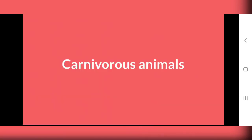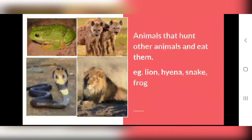The second group of animals is Carnivorous Animals. Carnivorous means flesh-eating — 'carni' means flesh and 'vorous' means eating. So, Carnivorous Animals are flesh-eating animals.